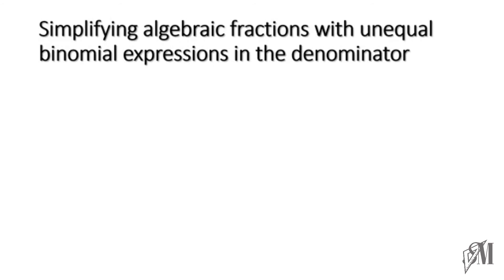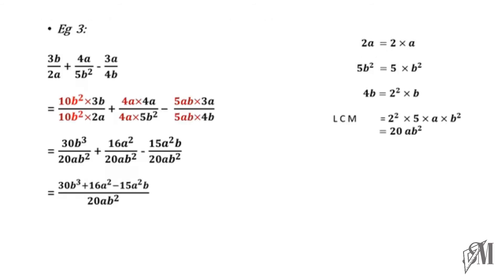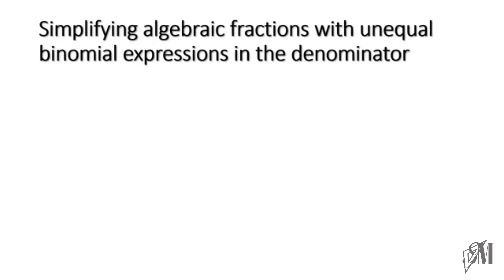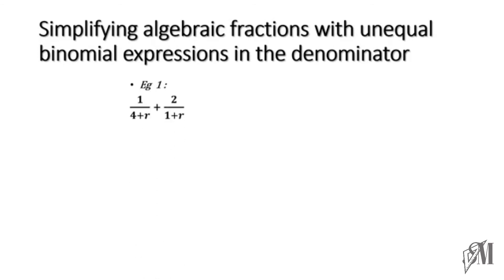Now let's look at another section: simplifying algebraic fractions with unequal binomial expressions in the denominator. Previously we had algebraic terms; here we are going to have unequal binomial expressions. Let's look at one example: 1 over (4 plus r) plus 2 over (1 plus r), where the denominators are (4 plus r) and (1 plus r).